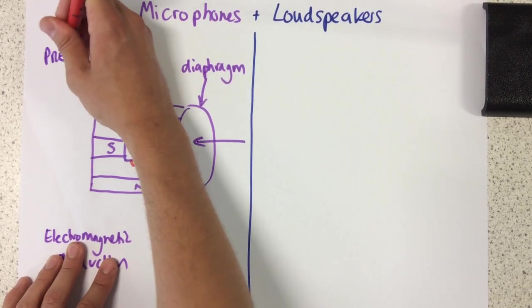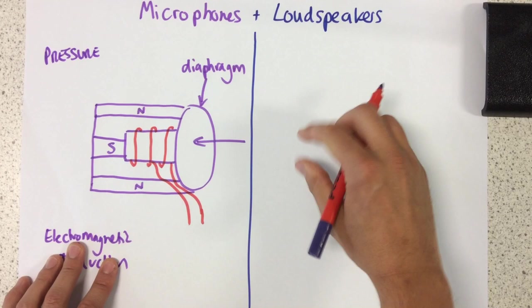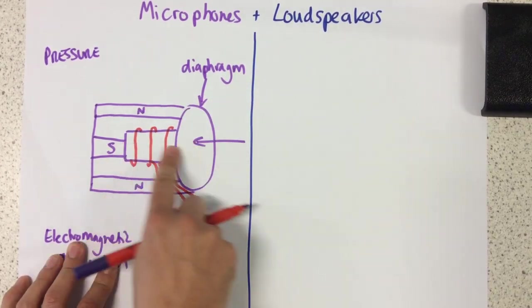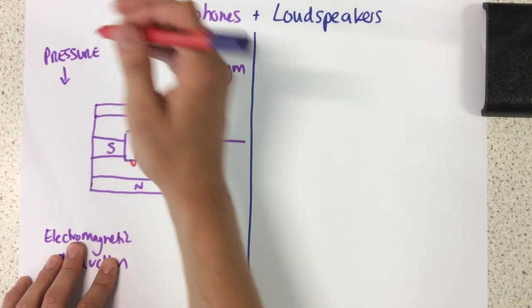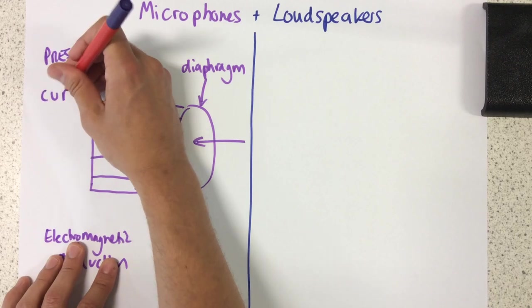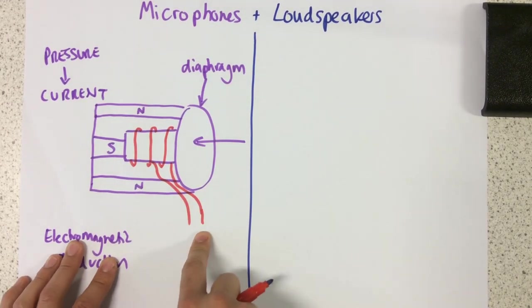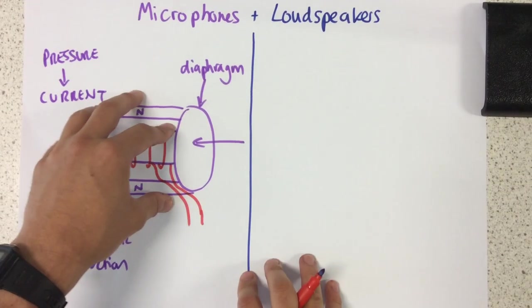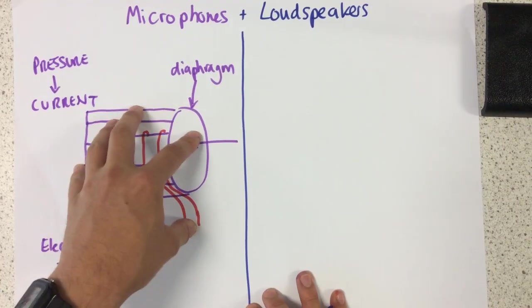We start off with pressure from the air. The air pressure which causes this to move and that pressure results in a current. Now, that signal can then be amplified and that is exactly how our microphone works.